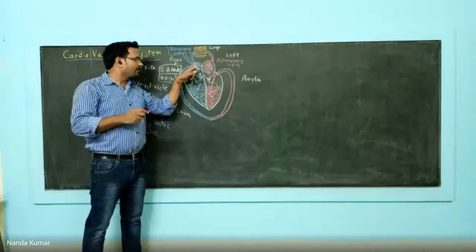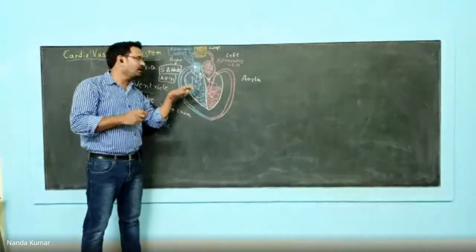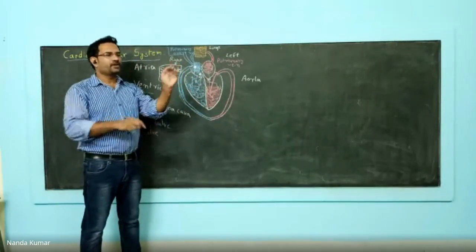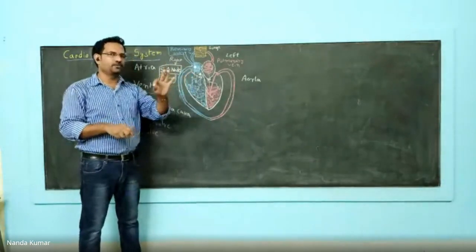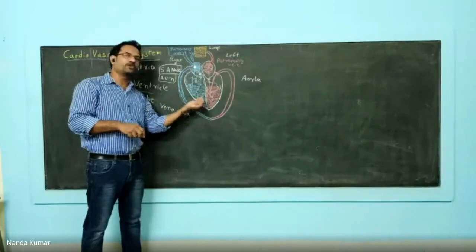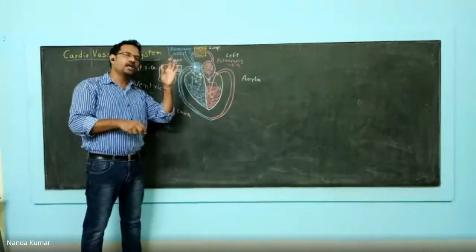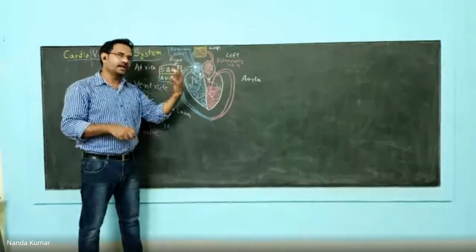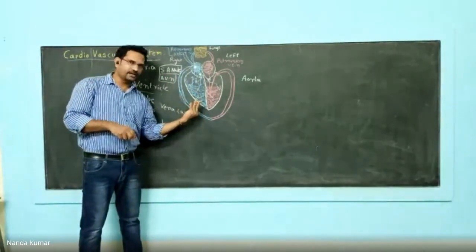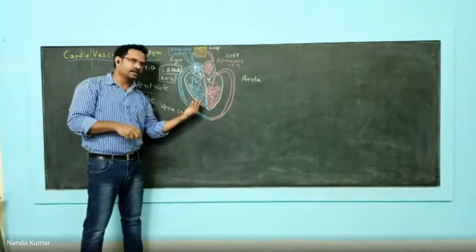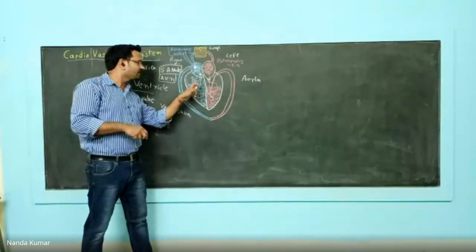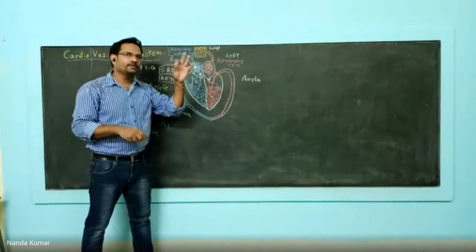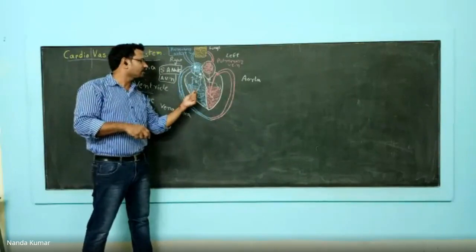Once the right atrium contracts, blood comes down to the right ventricle through the atrioventricular valve, known as the tricuspid valve. There are three cusps of tissue, hence the name. It allows unidirectional flow of blood only from atrium to ventricle. Contraction is systole and dilation is diastole. When the right ventricle contracts, blood is taken into the pulmonary artery, which carries the deoxygenated blood to the lungs.